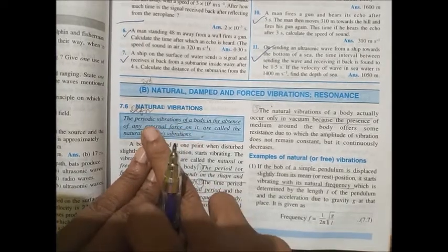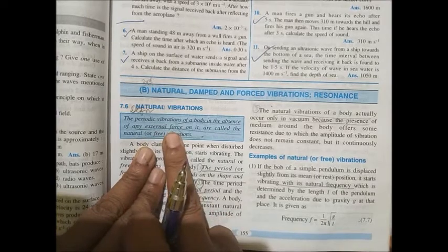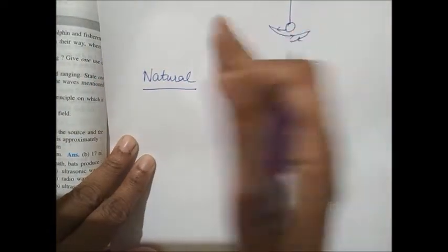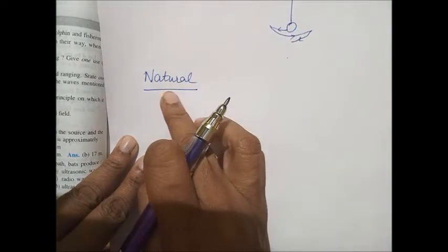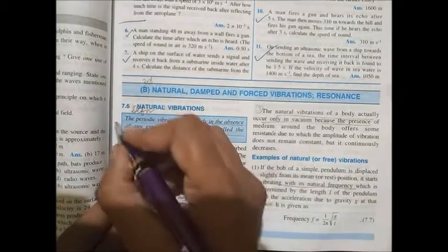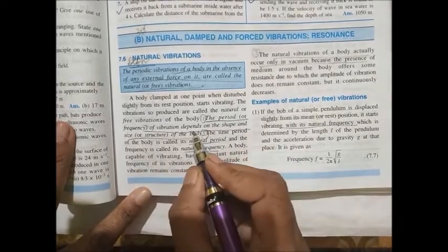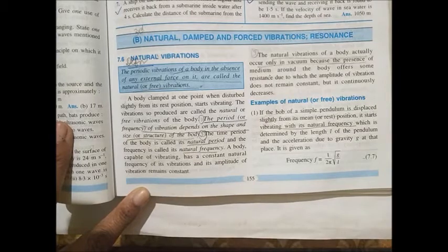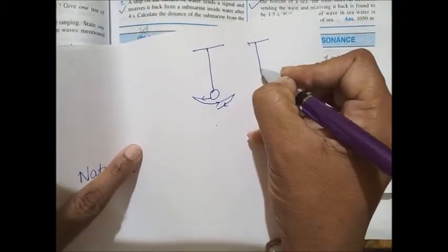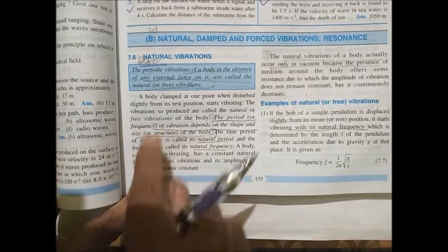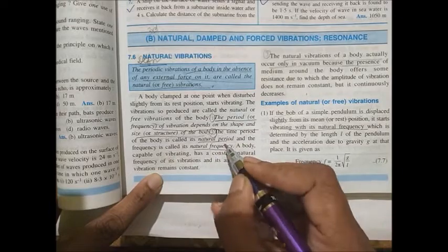The periodic vibration of a body — the word 'periodic' is important — in the absence of any external force on it. You just started the oscillation and then left it; there is no external force constantly bringing it back. That is called natural frequency. The period of vibration depends on the shape and size of the pendulum. A shorter pendulum will have a different frequency and a longer pendulum will have a different frequency. The time period is called the natural period and the frequency is called the natural frequency.